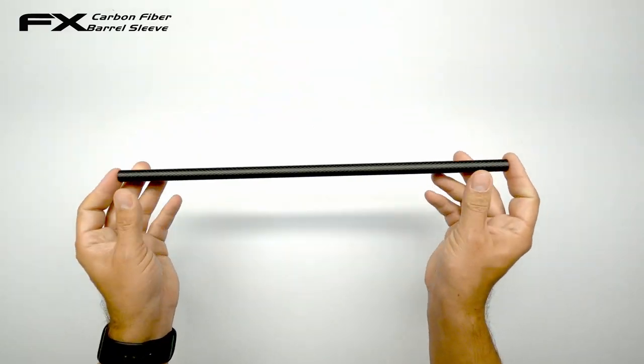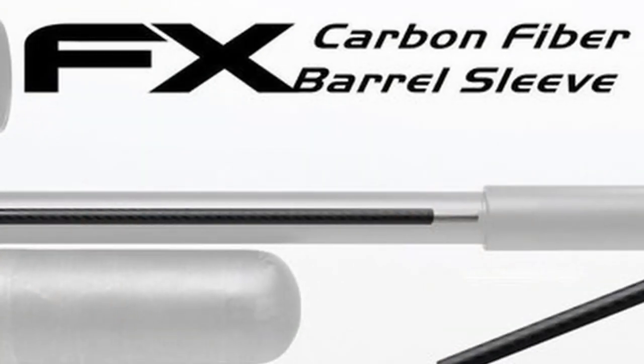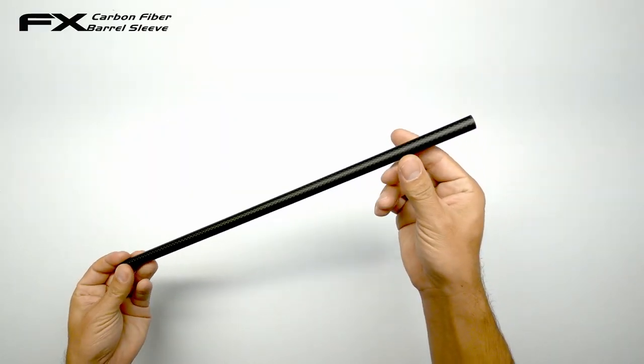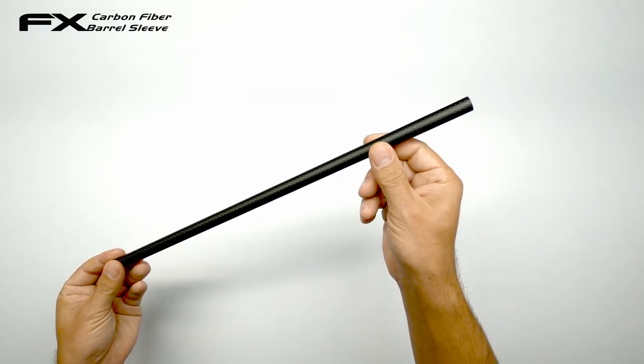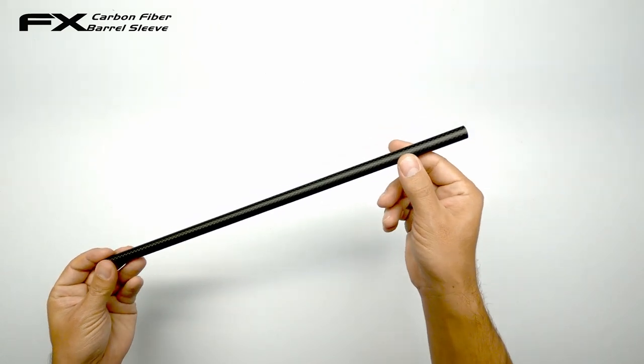So one thing that can help out a lot is one of these. This is a carbon fiber liner sleeve by FX Airguns to stiffen up your barrel. So let's get a brief overview of them and get one installed in my M3 as well. Let's get started.